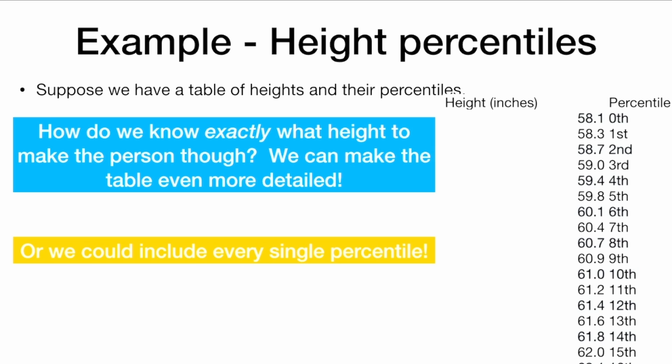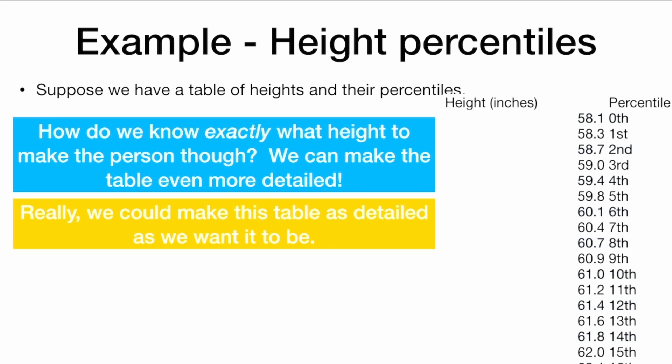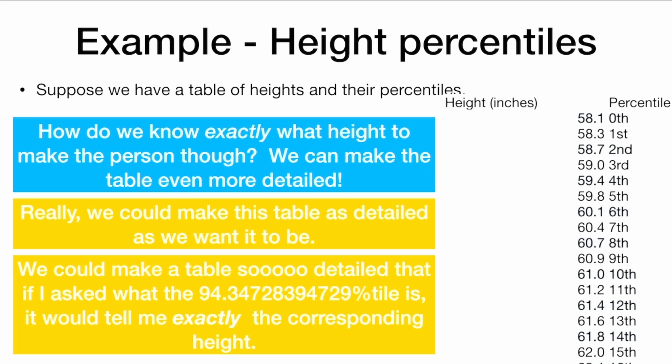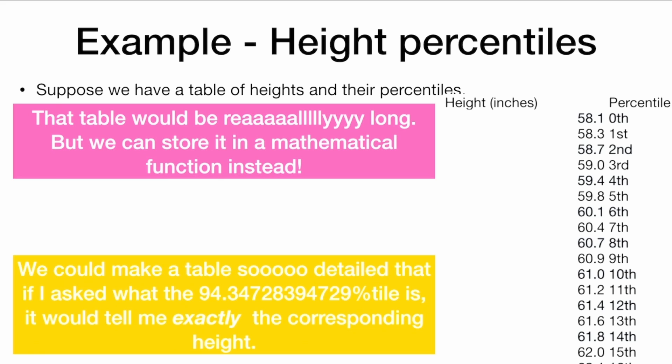Or we could include every single percentile. Really, we could make this table as detailed as we want it to be. We could make a table so detailed that if I asked you what the 94.34728394729 percentile is, it would tell me exactly the corresponding height. Now, that table would be really long. But we can often store the whole table in a mathematical function instead.